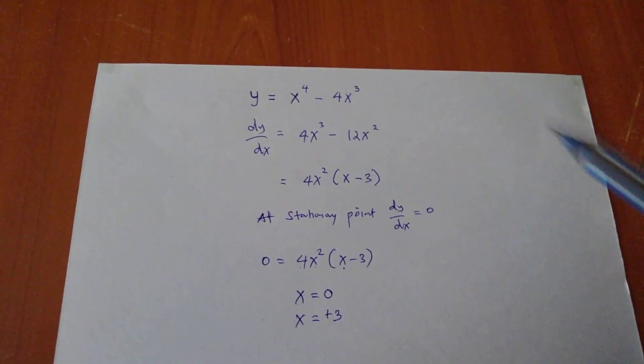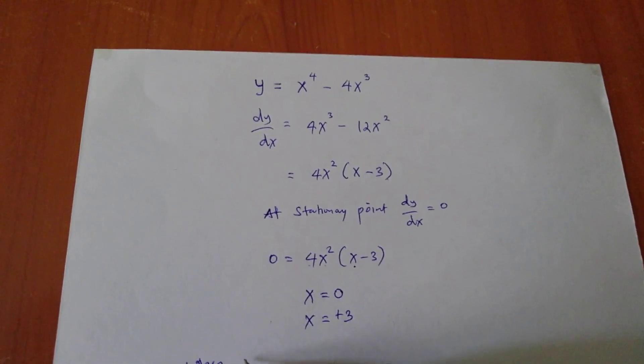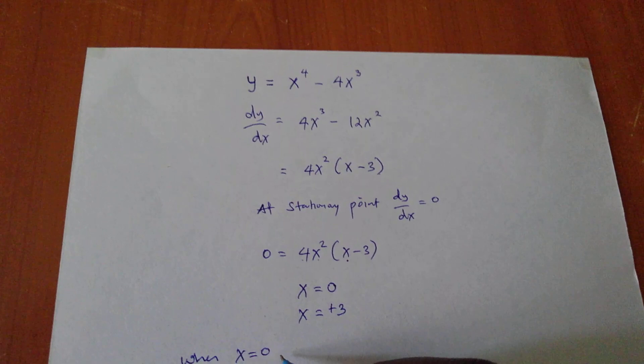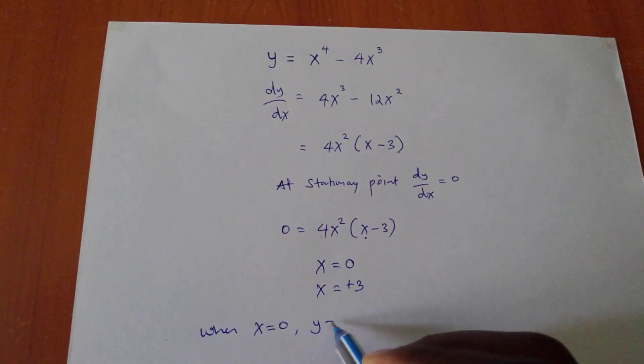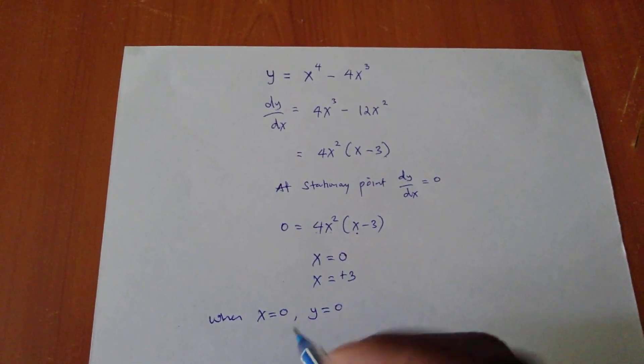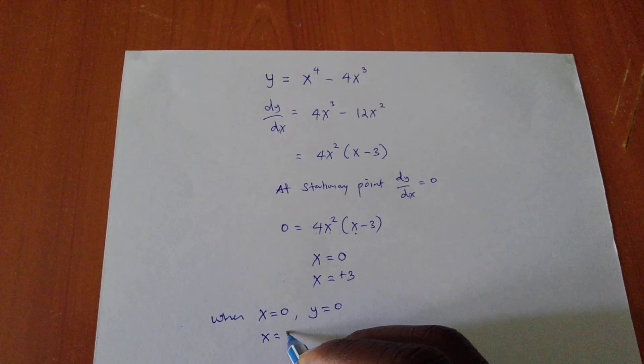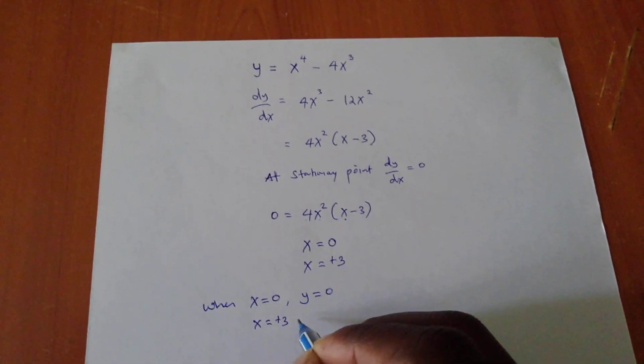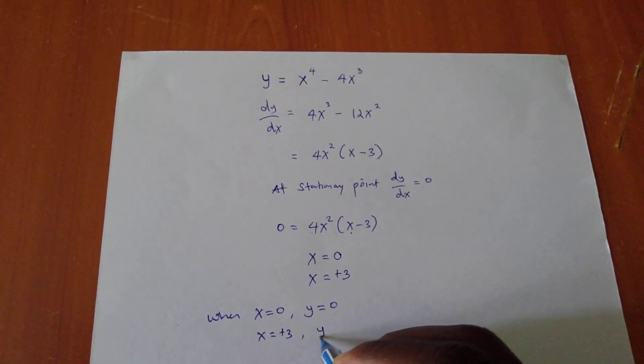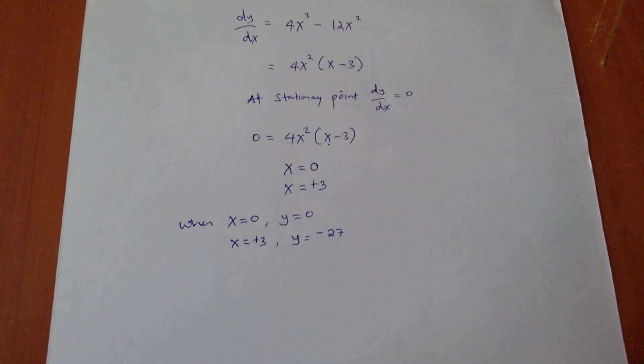And if I try to put that, I'm going to say when x is equal to 0, my y will also be 0. And when I have my x to be positive 3, I will get my y as negative 27. I hope you agree on that.